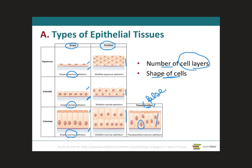Therefore, when we put everything together — the cell layers with the shape of the cells — you're going to get a simple squamous epithelium if it's one cell layer and flat cells; a simple cuboidal epithelium if it's one cell layer and the cells are squared; a simple columnar epithelium if the cells are rectangular in shape and you have one cell layer. If you have more than one cell layer, then you're going to look at the cells that are located on the apical part of the tissue, so on the part that is further away from the basal lamina. These cells over here look flat and they're more than one cell layer, so they're called stratified squamous epithelium.